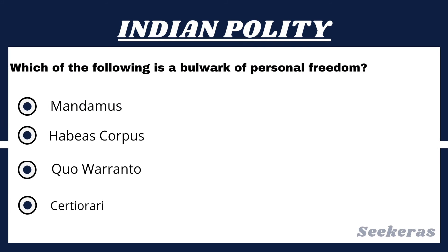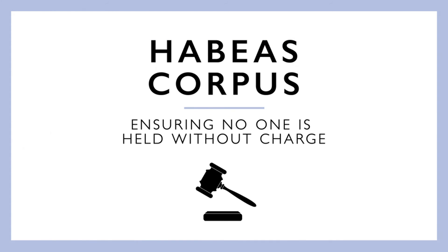Question number 12. Which of the following is a bulwark of personal freedom? Option 1, Mandamus; Option 2, Habeas corpus; Option 3, Quo warranto; or Option 4, Certiorari. The answer is Option 2, Habeas corpus. Habeas corpus is a bulwark of personal freedom. It is a legal writ through which a person can seek relief from the unlawful detention of him or herself or of another person.